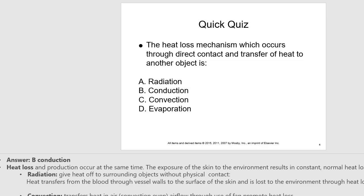In the body, when we need to conserve heat, we have vasoconstriction at the skin level, which helps conserve heat into the body. When we need to cool the body — such as when we're working out and sweating — we have vasodilation near the skin, which helps the body lose more heat through radiation.